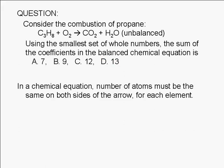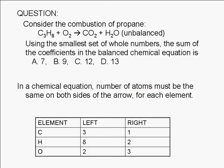In a chemical equation, the number of atoms must be the same on both sides of the arrow for each element. Let's count the atoms in the unbalanced equation. There are three elements shown in the equation: carbon, oxygen, and hydrogen.